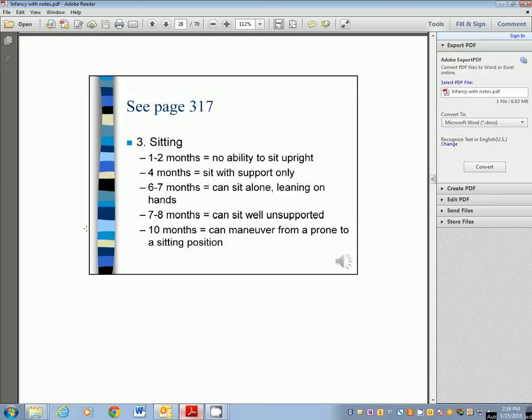Sitting. You can see some cute pictures on page 317. At one to two months, they have no ability to sit upright. At four months, they can only sit with support. At six to seven months, they can sit alone leaning on their hands. By seven to eight months, they can sit well unsupported. By ten months, they should be able to maneuver from a prone to a sitting position.